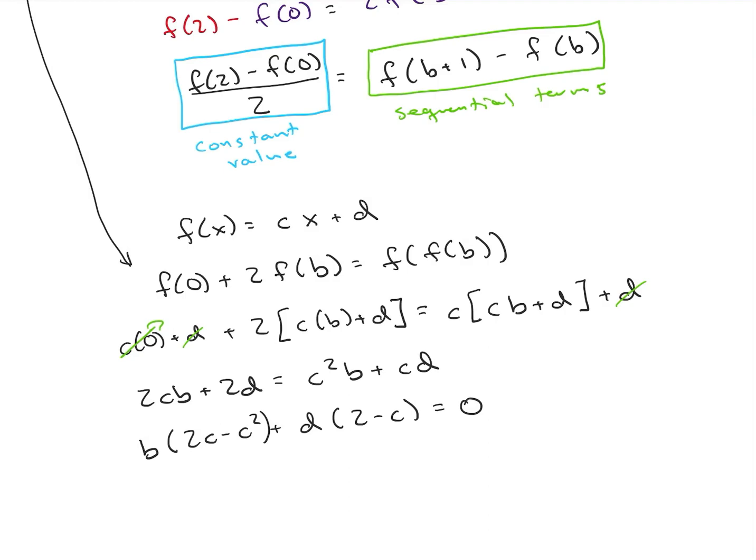So one thing we know: c and d are constants, parameters in our equations. b is our variable which can be changing. So what does that mean? If we can plug in any b value and this equation needs to work, that means 2c minus c squared must equal 0 and the second term d times 2 minus c must also equal 0.